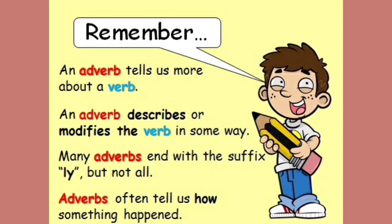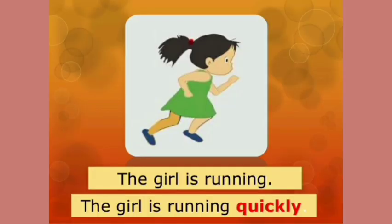In this video I have explained rules for forming adverbs from adjectives — you need to remember those rules. Here is one example of how the adverb of manner describes the action: 'The girl is running' versus 'The girl is running quickly.' Here 'quickly' is the adverb of manner — it describes the action of running. How is she running? She is running quickly.